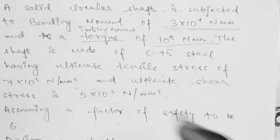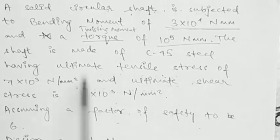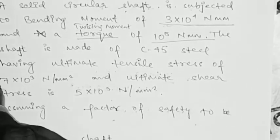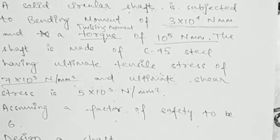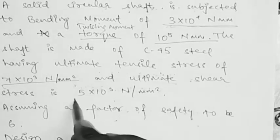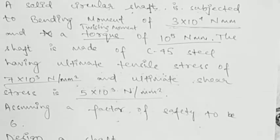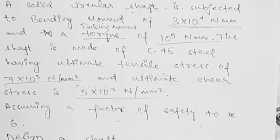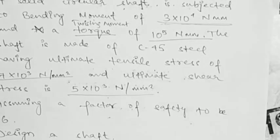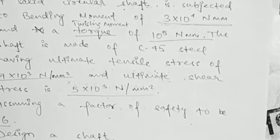The shaft is made of C45 steel having an ultimate tensile stress of 7 × 10³ N/mm² and an ultimate shear stress of 5 × 10³ N/mm². Assuming a factor of safety of 6, design the shaft.